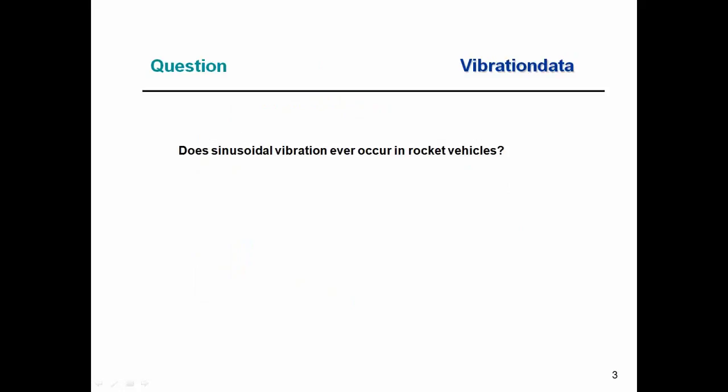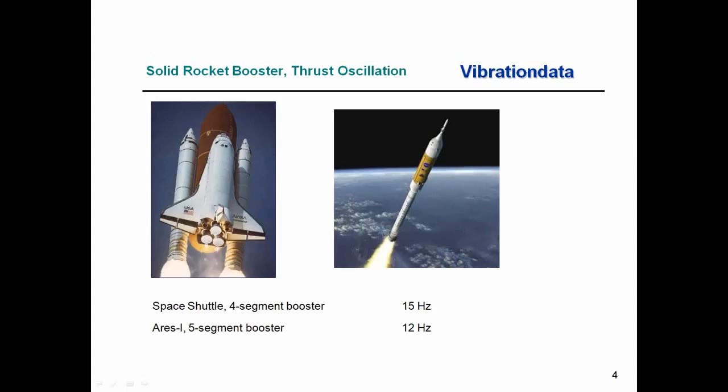Does sinusoidal vibration occur in rocket vehicles? Yes, it does. Some of you may work in automotive, ships, aircraft, semiconductor fabs, or other machinery — cross-training is always valuable. For examples: the Space Shuttle had two solid rocket motor strap-on boosters with four segments each. For the Constellation ARIES-1 program, one booster would be given a fifth segment, making it elongated.